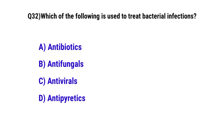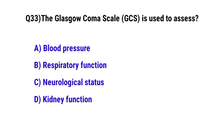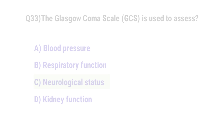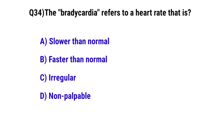Question No. 32: Which of the following is used to treat bacterial infection? The correct option is A: antibiotics. Question No. 33: The Glasgow Coma Scale is used to assess — the correct option is C: neurological status.